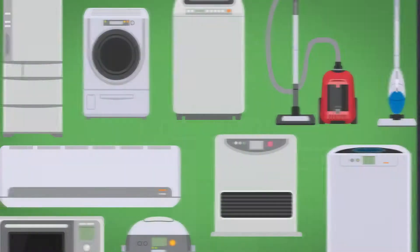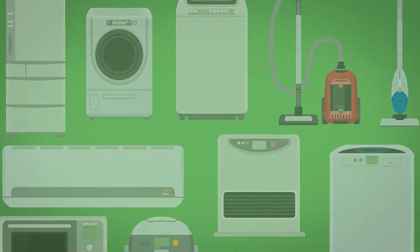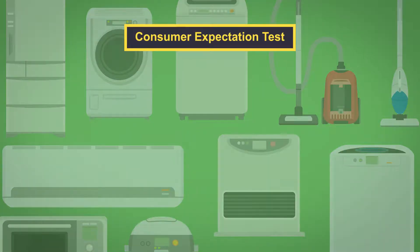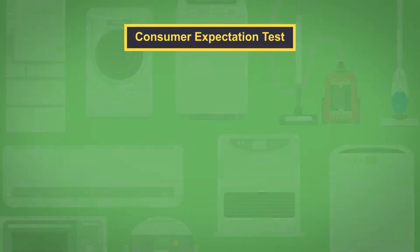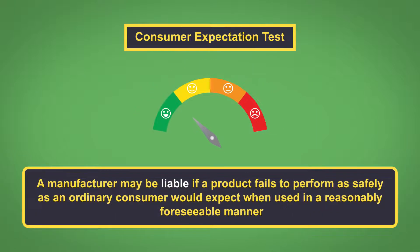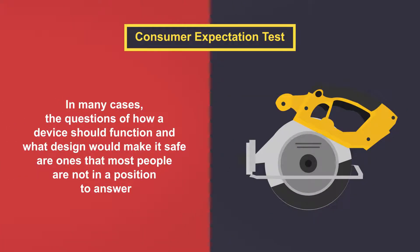An alternative approach to design defect is called the consumer expectation test. Under this test, a manufacturer may be liable if a product fails to perform as safely as an ordinary customer would expect when used in a reasonably foreseeable manner. However, in many cases, the questions of how a device should function and what design would make it safe are ones that most people are not in a position to answer.